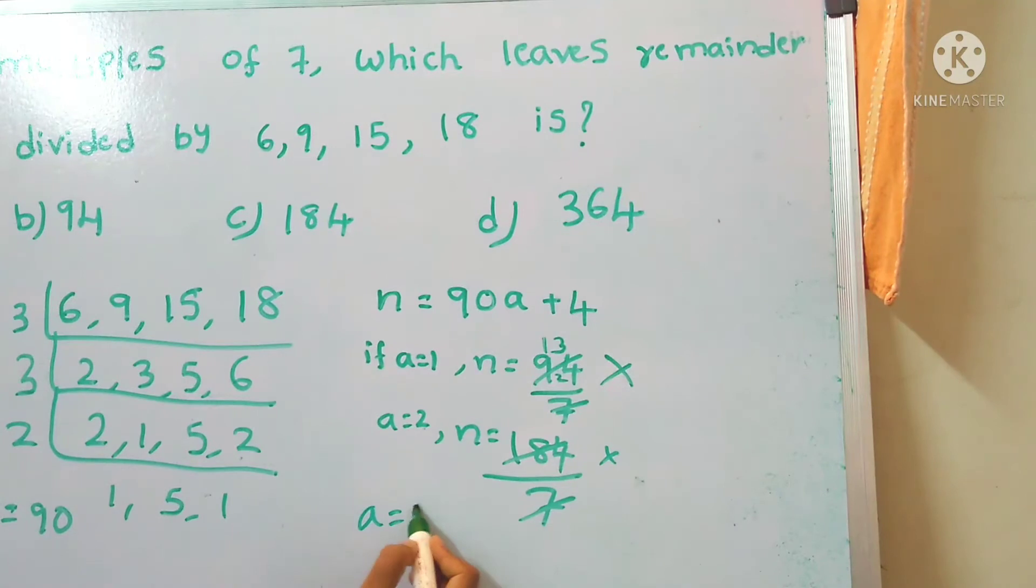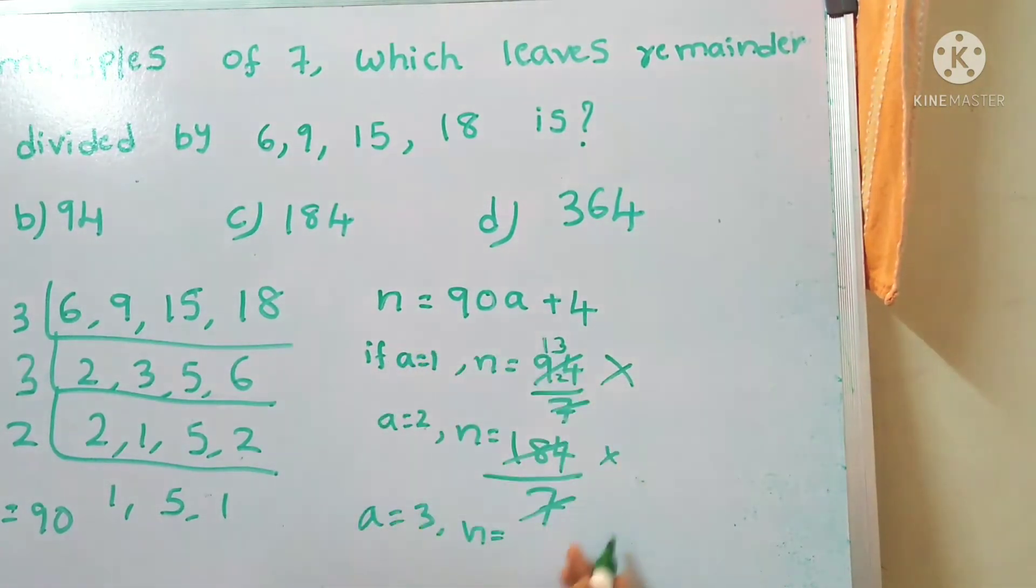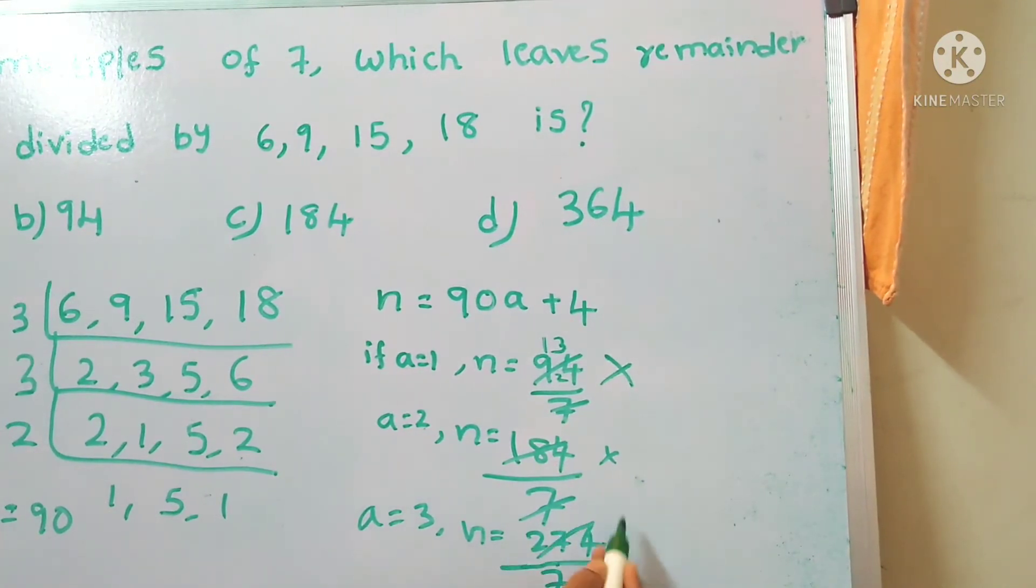Let's take a equals to 3, and n equals to 9 times 3 is 27, plus 4, 274 divided by 7. 7 times 3 is 21, remainder 6, 7 times 9 is 63. It is not divisible by 7.